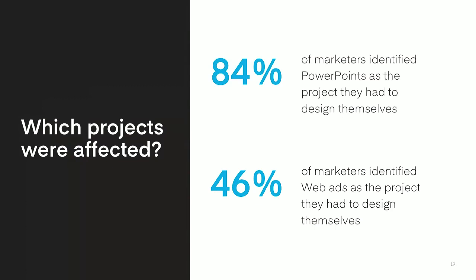The types of projects affected were really across the board. PowerPoints and event materials are very common, but web ads and sales and marketing documents were also pretty common, each with 40% of respondents saying they had to design those project types in the past year. On average, marketers in our study identified four and a half different types of projects that they had to tackle with no help from a professional designer. This potential for do-it-yourself design is leaking into all parts of the funnel across virtually every marketing channel — digital or not.